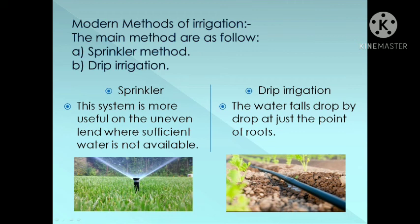The modern methods of irrigation are the sprinkler method and drip irrigation. The sprinkler system is more useful on uneven land where sufficient water is not available. In drip irrigation, water falls drop by drop at just the point of the roots.